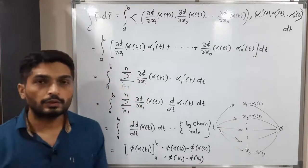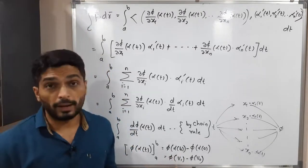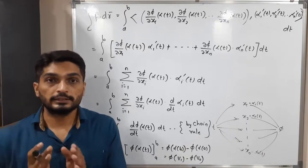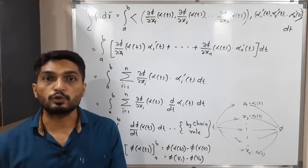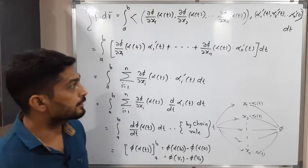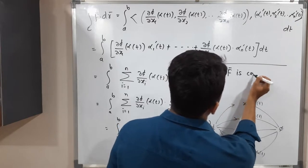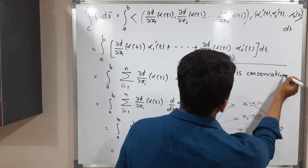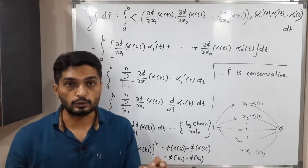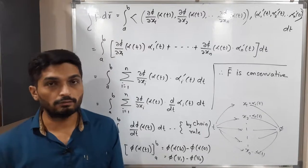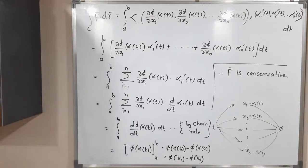So we found that the line integral of f over C equals phi(v₁) minus phi(v₀), which depends only on v₀ and v₁ — the starting and ending points — and does not depend on the curve C. Therefore, the line integral of f is independent of the path and depends on the endpoints only. Therefore, f-bar is conservative. This completes the proof.